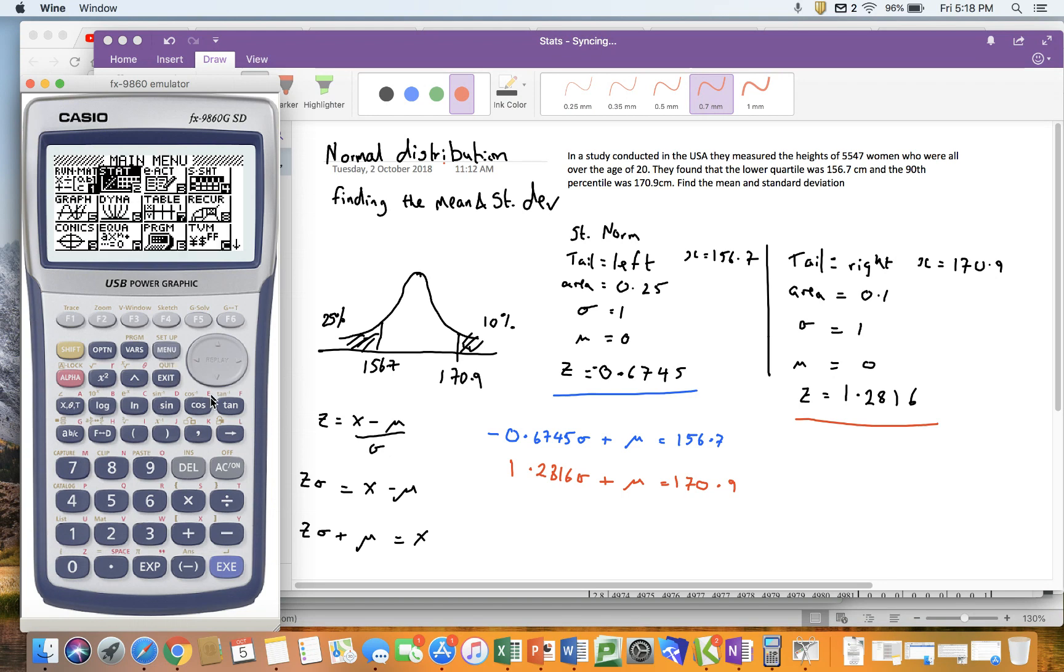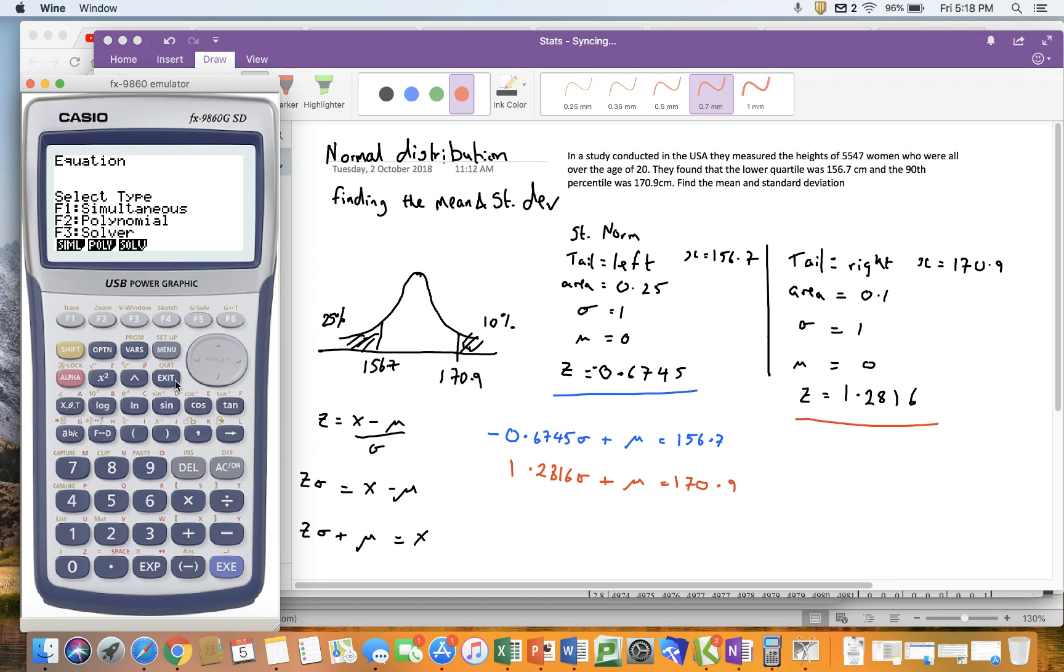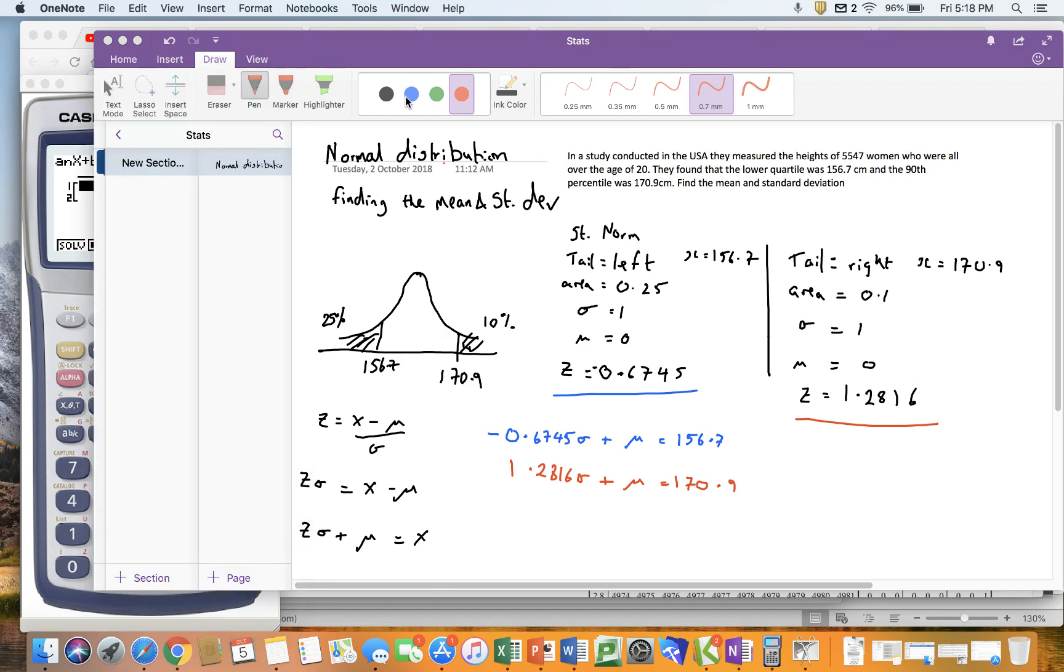So I'm inherently lazy, and my graphics calculator has a simultaneous function underneath the equation part, the same place we've been going to do solver. So I've got to go in and say I've got two unknowns, and this is in the same format as these equations, which is why I did that rearranging a minute ago. All I've got to do is take the coefficients of each part.